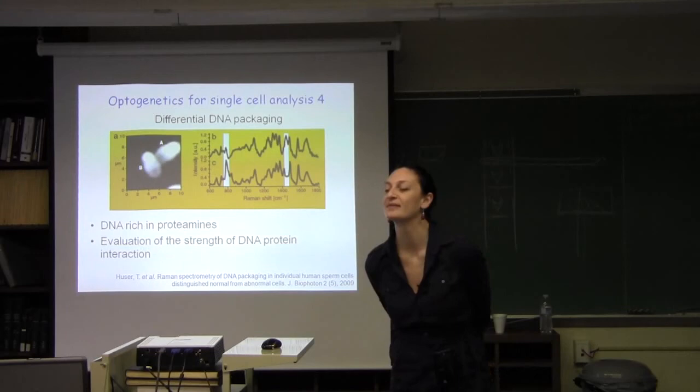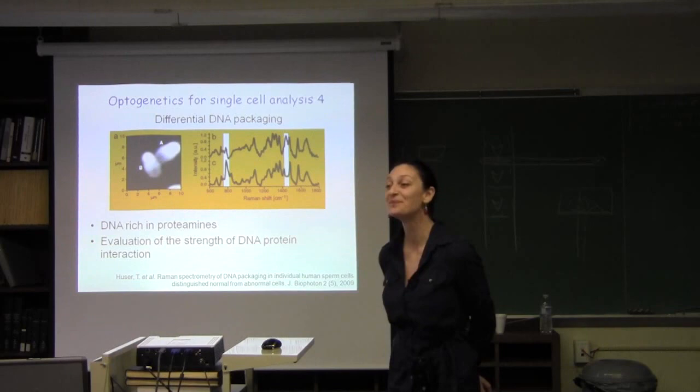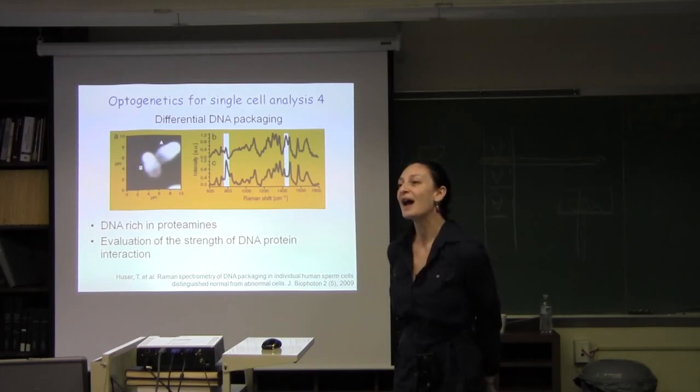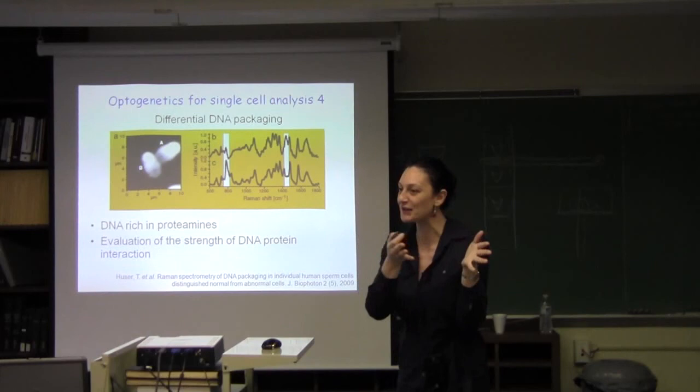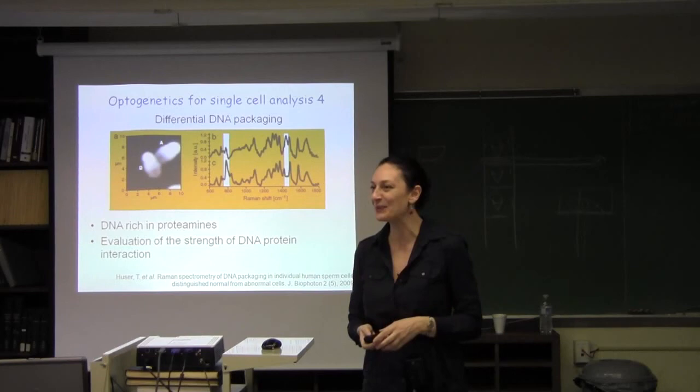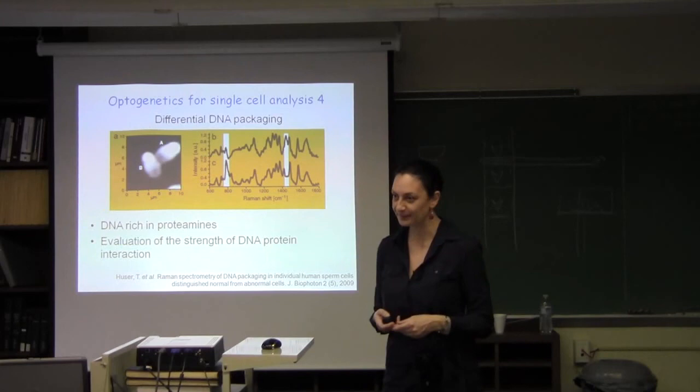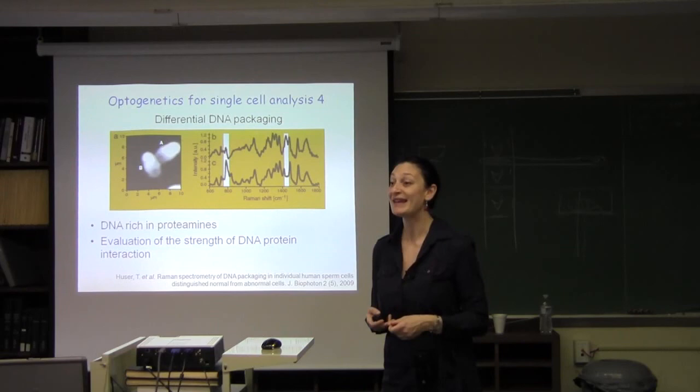I think this technique would be very powerful even to study the different stages of the cell cycle. During different stages of the cell cycle, the DNA is bound with different types of proteins. So one can really find out about the phase of the cell cycle. If you synchronize your set of cells in different phases and then you probe, I bet you will find differences in Raman spectrum. Instead of looking at different probes and different parameters, one can simply do this with Raman spectrum.